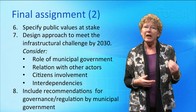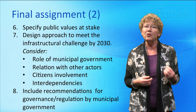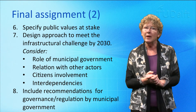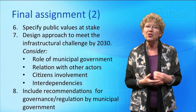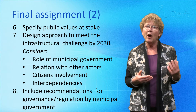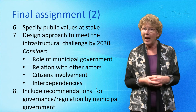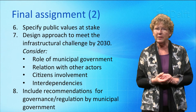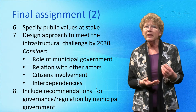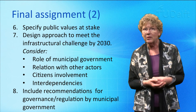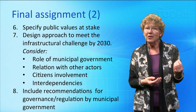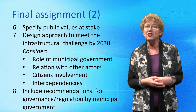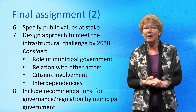But anyway, you need to stage a process towards achievable goals in 2030, and your process must be adaptive to unforeseen developments on the way. Specify which role the municipal government should play in the actor network, and how this role relates to other roles, tasks and responsibilities in the actor network. And how can citizens be involved in developing and or realizing the new strategy? You may also want to take interdependencies with other infrastructures into account. Do not forget to include recommendations, and the argumentation for those recommendations, for infrastructure governance and regulation, which will help the municipal government to bring the new strategy into being.